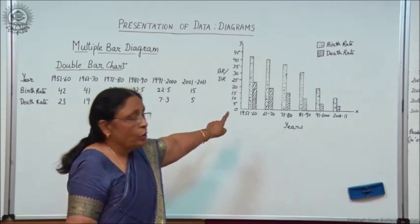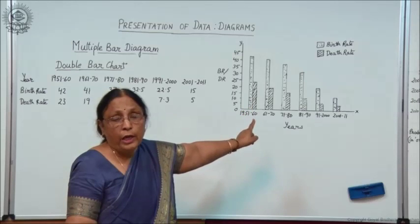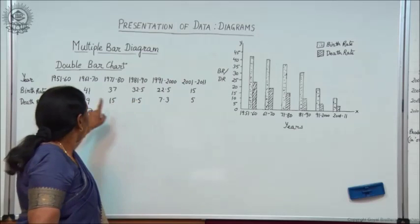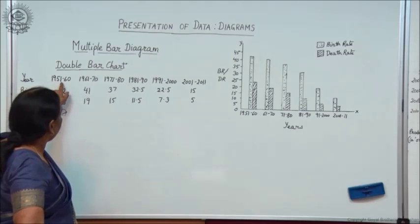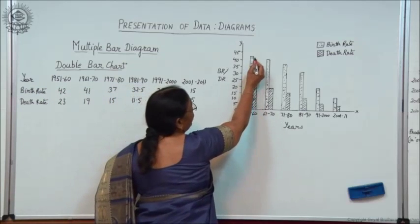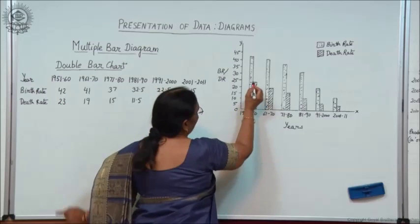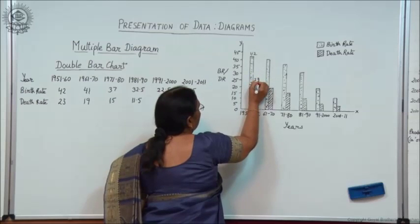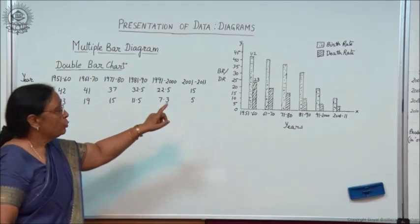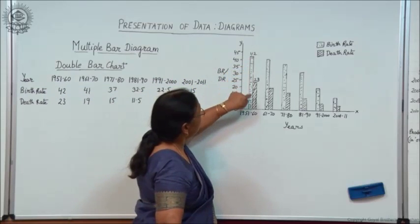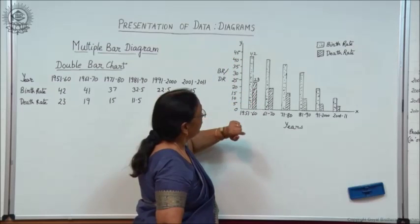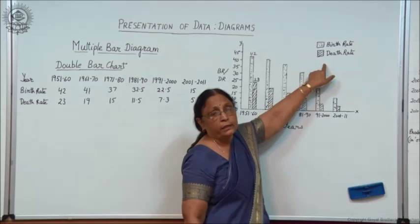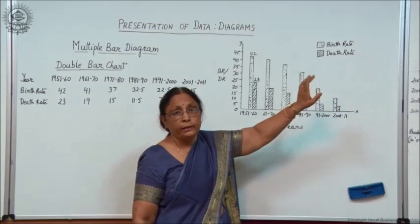You have to draw two adjacent bars and the length of the bar depends upon the given data. For example, from 1951 to 1960, the birth rate was 42 and the death rate was 23. One bar with dots shows birth rate and the other shows death rate. To indicate the symbols, you have to make an index here, also known as a legend — L-E-G-E-N-D.